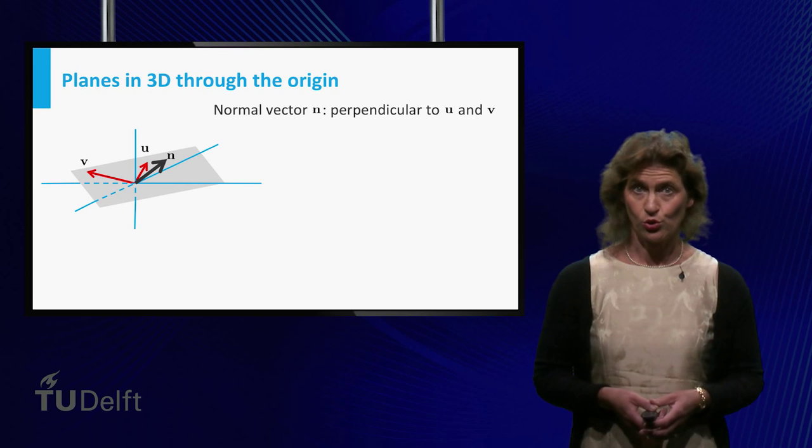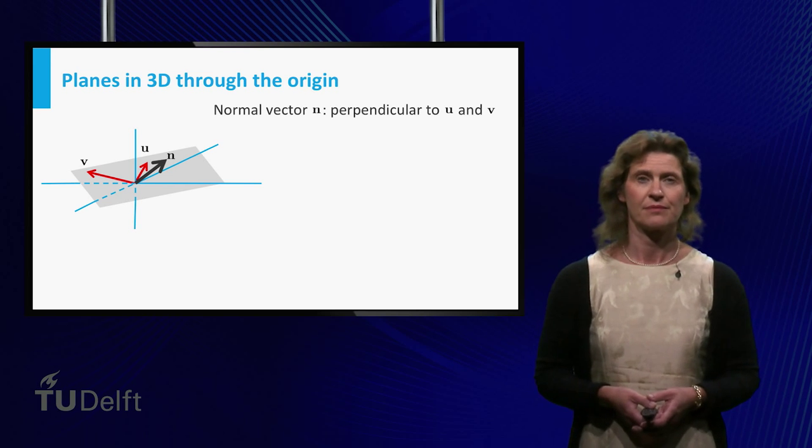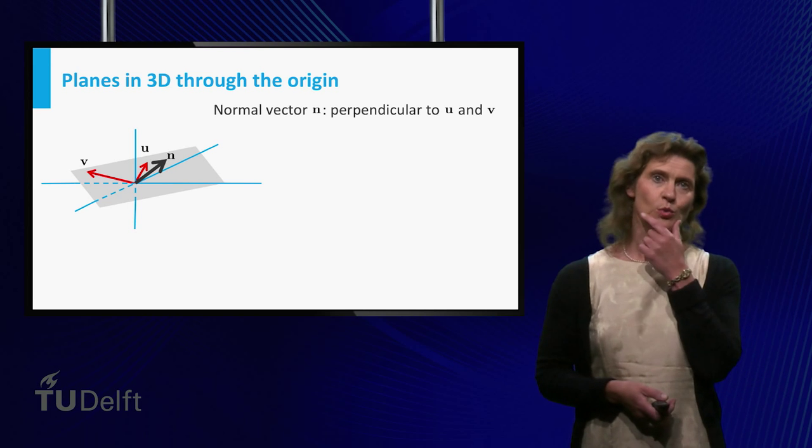Such a vector is called a normal vector, let's denote it by n. And let's think about a way of finding n.